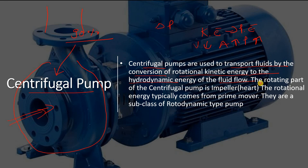The rotating part of the centrifugal pump is the impeller, also called the heart of the centrifugal pump. The rotational energy typically comes from the prime mover — a motor or engine. Centrifugal pumps are a subclass of rotodynamic pumps.